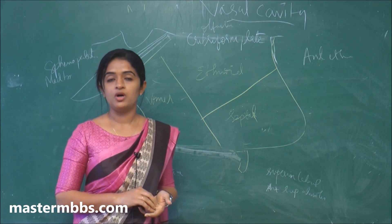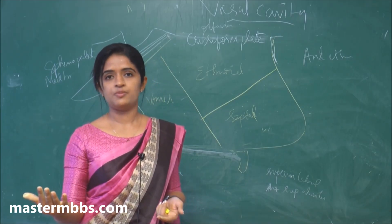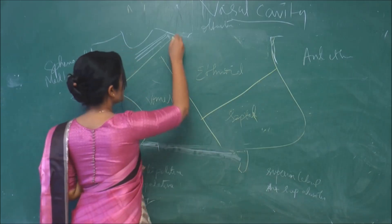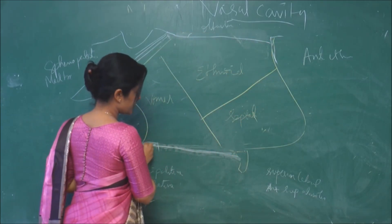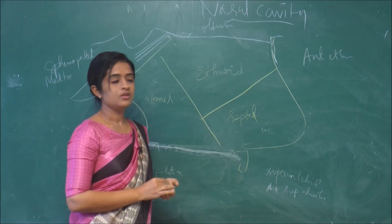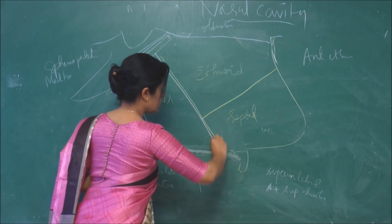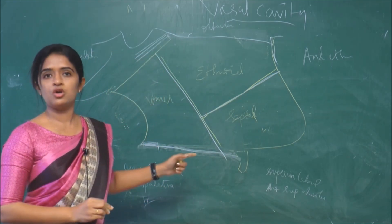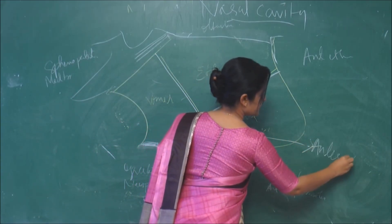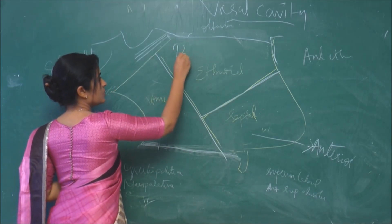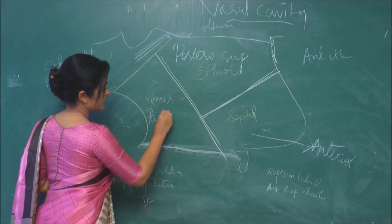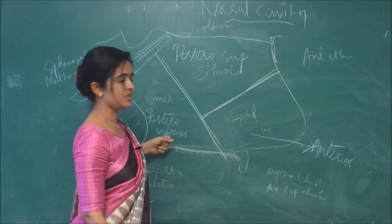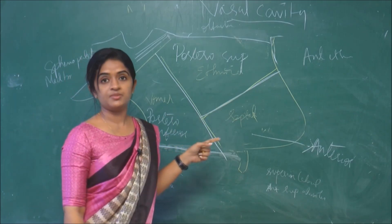The nasal septum is made up of a bony part and a cartilaginous part. This is the roof, this is the floor, and in between you have the nasal septum. We can draw an oblique line and one line anteriorly, so that we get roughly three quadrants: the anterior part, the posterosuperior part, and the posteroinferior part. This is how we are going to describe the nasal septum.